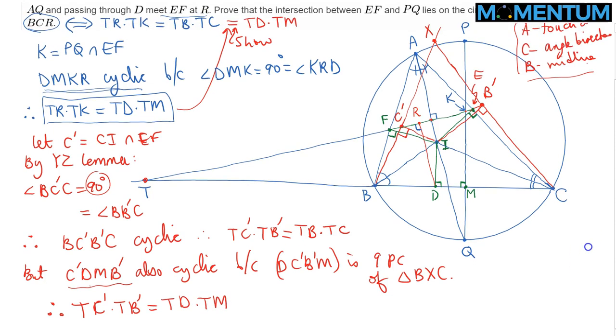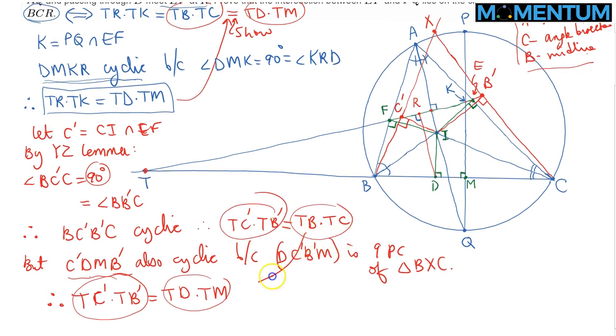But that does the trick now. We needed to show that TD times TM is equal to TB times TC. Now TD times TM equals TC' times TB', and TB times TC also equals TB' times TC'. So therefore, these two quantities are indeed equivalent, and that shows the desired result.